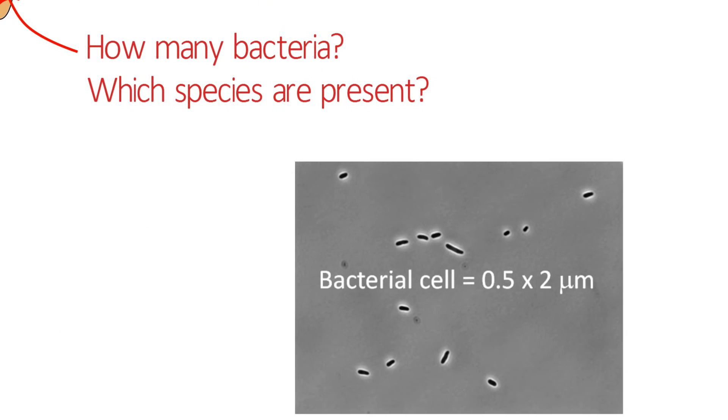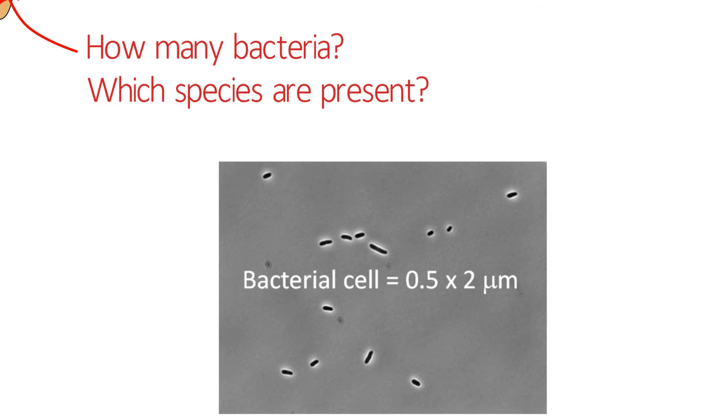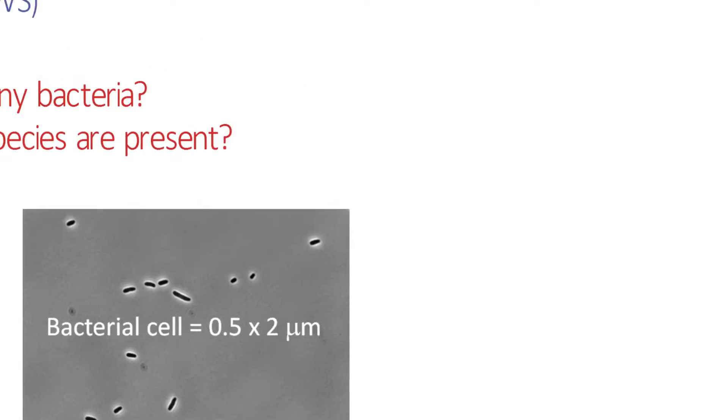So how on earth can we identify bacterial species when their cells are only one or two micrometers across? These practicals are going to introduce you to a few different strategies that are used in labs across the world to do just that.